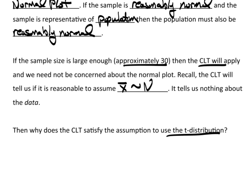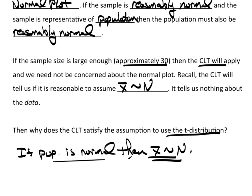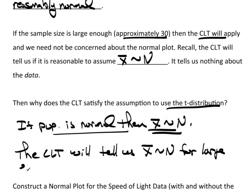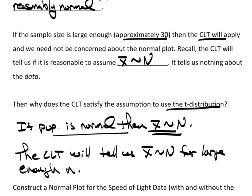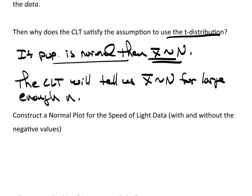Well, it's really pretty simple. The idea is: if the population is normal, then x-bar will also be distributed normal, and that's kind of the key here. If the population is not normal, then the CLT will tell us that x-bar is approximately normal for large enough n. That's basically why we can use one or the other. If you have a small sample size, you need to take a look at a normal plot and make sure that you're okay. So let's take a look at the normal plot for the speed of light data, both with and without the negative values.